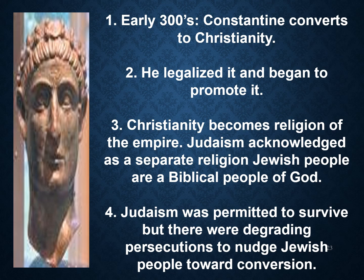By the early 300s, when Constantine converted to Christianity, he legalized it, began to promote it, and that's when Christianity became a religion of the empire — an institutionalized religion. Judaism was acknowledged as a separate religion and some Jewish people were permitted to survive, but there was certainly degrading persecution that started towards Jewish people. In some cases, they were forced to convert to Christianity.